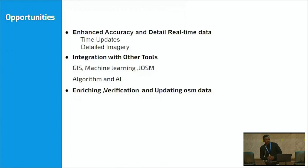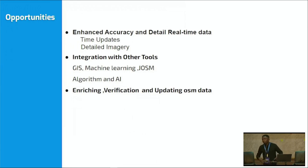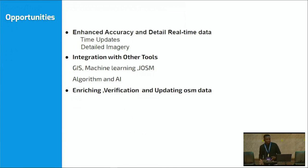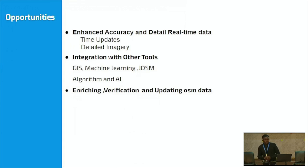So what are the key points from this? First, we have enhanced accurate and detailed real-time data — timely updated and detailed images where you can see all information from buildings including building level, building material, and building condition, even whether construction is complete or ongoing. Also there is integration with other tools — you can integrate those data with GIS, machine learning, JOSM, algorithms, and other AI. And this is one way to enrich and verify the updating of OSM data.